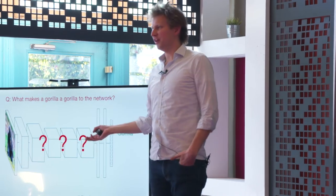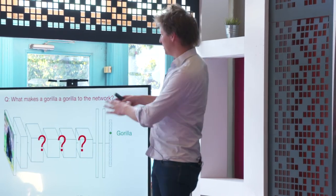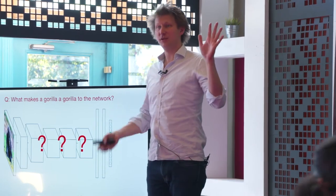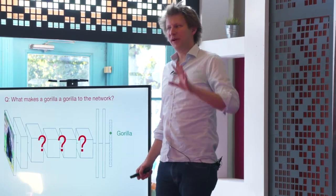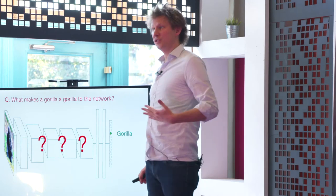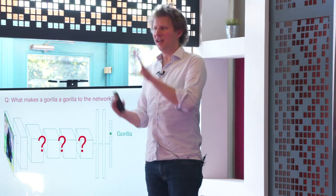What makes a gorilla a gorilla to the network? So I show you this picture of a gorilla, you kind of know it's a gorilla, but what about it? What specifically about that picture makes it a gorilla to the network? Is it the face of the gorilla or the fur of the gorilla, or is it the background—like any animal on top of this specific type of grass near gorilla habitats?